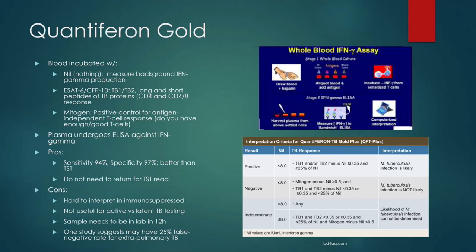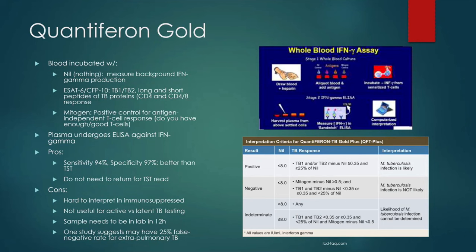The sample must reach the lab within 12 hours because you're starting with live biological material and relying on a biological response. Leaving a sample in the office for 12 hours then shipping it on a warm truck won't work. Most places can process it in-house, which is why QuantiFERON is often available on site. There are also studies suggesting a higher false-negative rate for extra-pulmonary TB — including genitourinary or pleural TB.